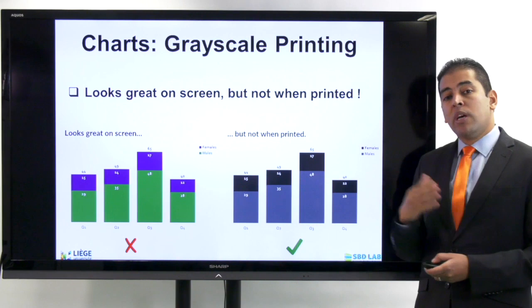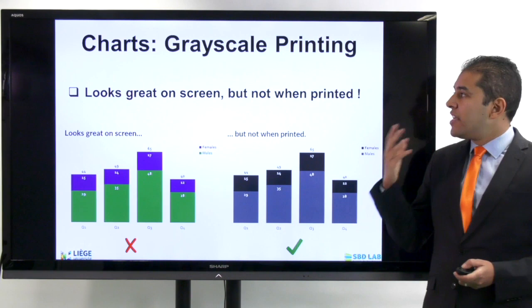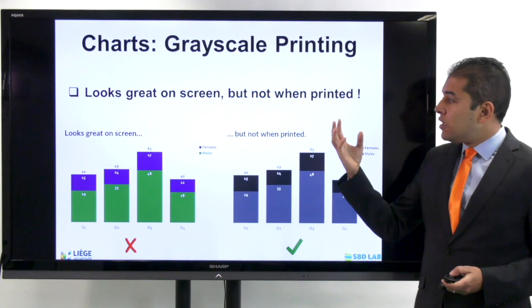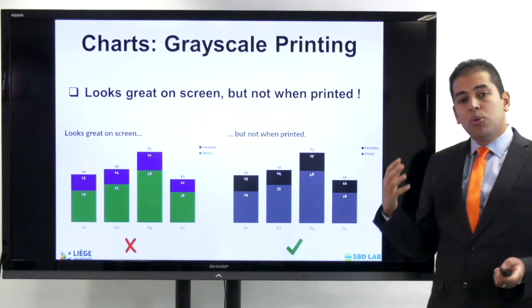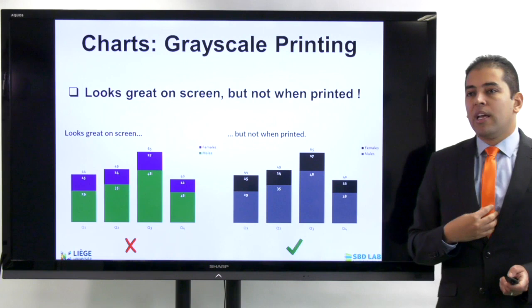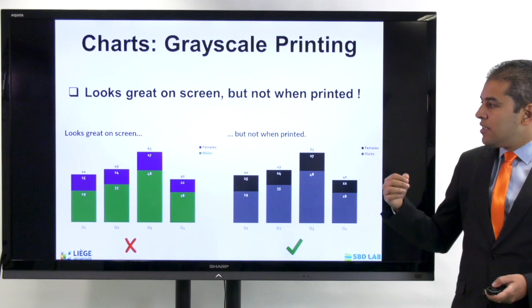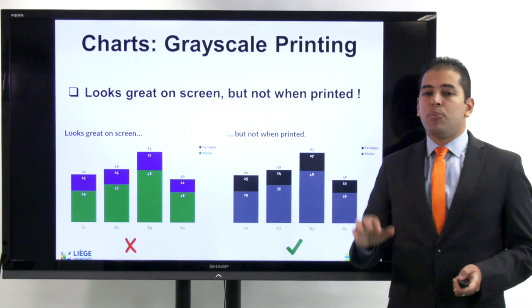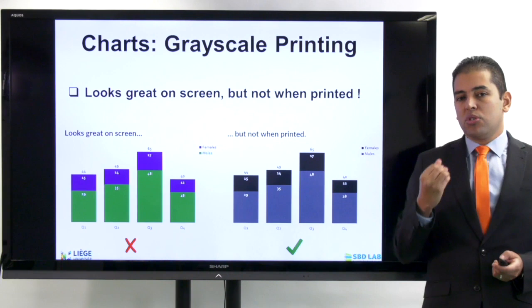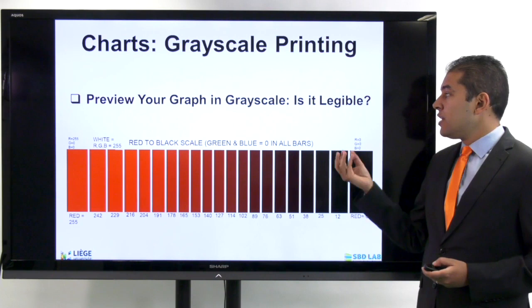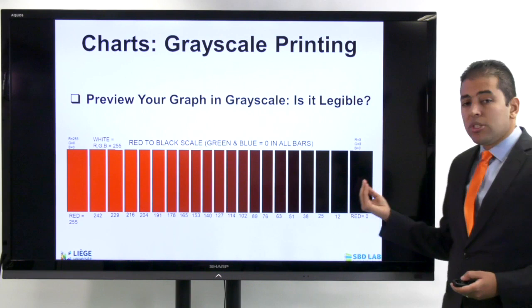Another important consideration when drawing an effective graph is the grayscale printing option. I need to make sure that my graph is black-and-white friendly. It may look great on screen, but when it's printed, does it look great or not? Keep in mind that many people do not have access to a colored printer or cannot view the document on a colored screen. So it's very important that you look at your graph colors and make sure that when they are printed in grayscale, the reader can simply distinguish the information. Preview your graph in grayscale and make sure it is legible.